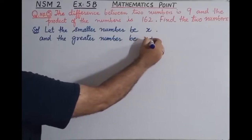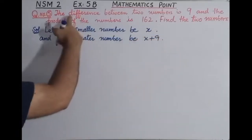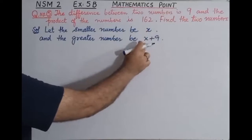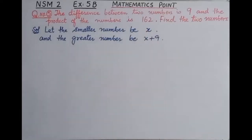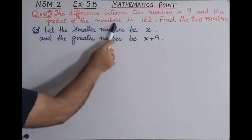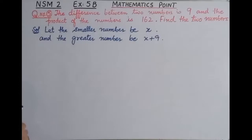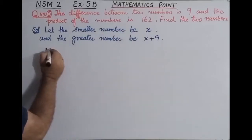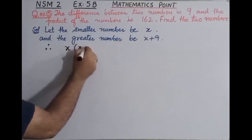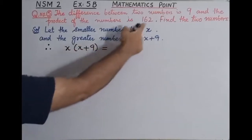We let the smaller number be x, so the greater number is x plus 9, because the difference between the two numbers is 9. According to the condition, the product of the numbers is x into x plus 9, which is equal to 162.